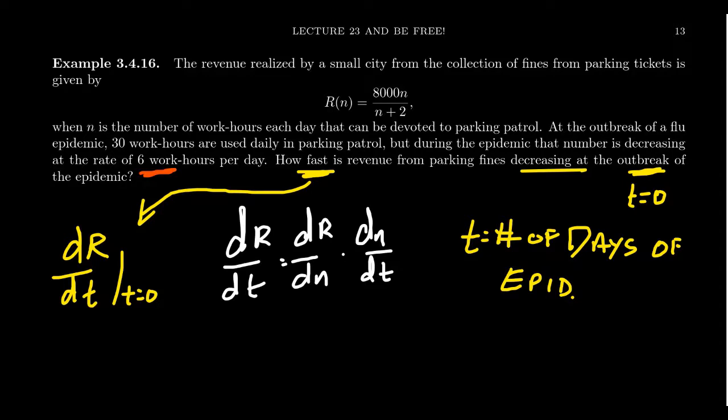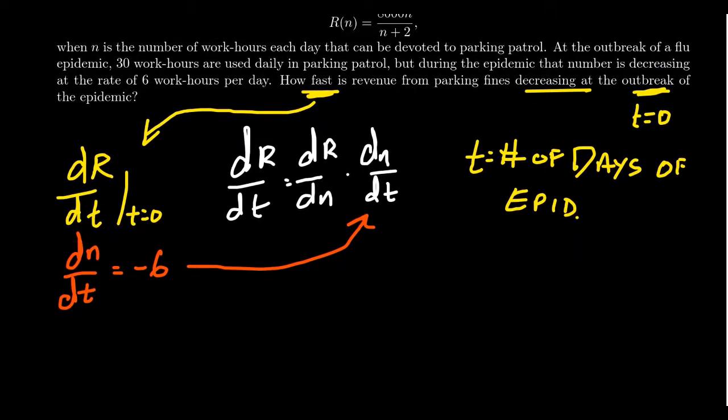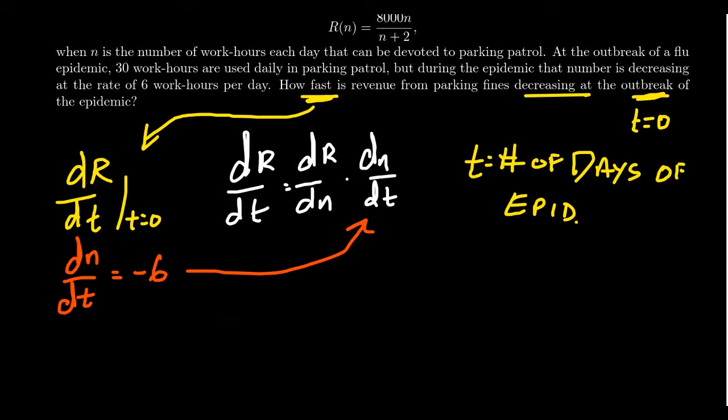The derivative of N with respect to t is the six work hours per day. So dN/dt is going to be decreasing six work hours per day, so the change of work hours with respect to time is going to be negative six. We can plug that in. Well then we still have to do this dR/dN business.